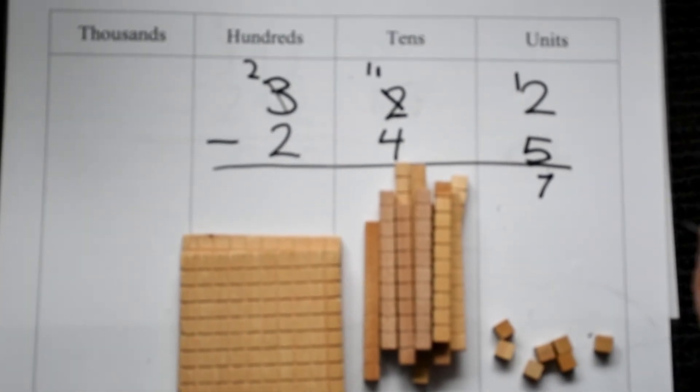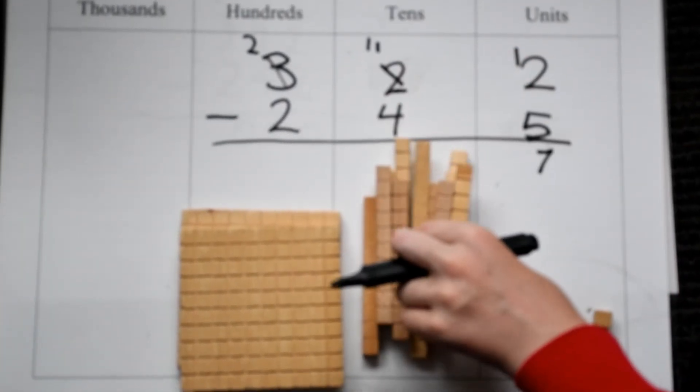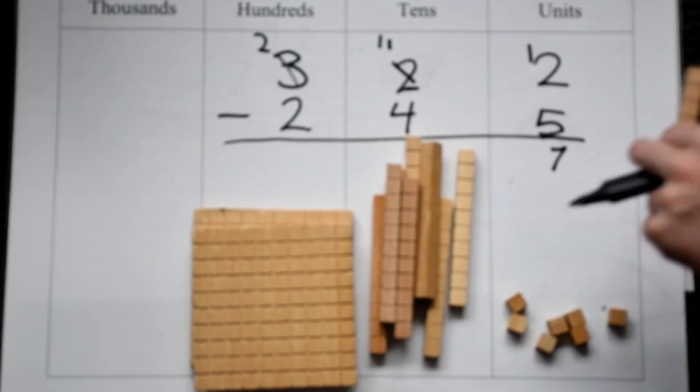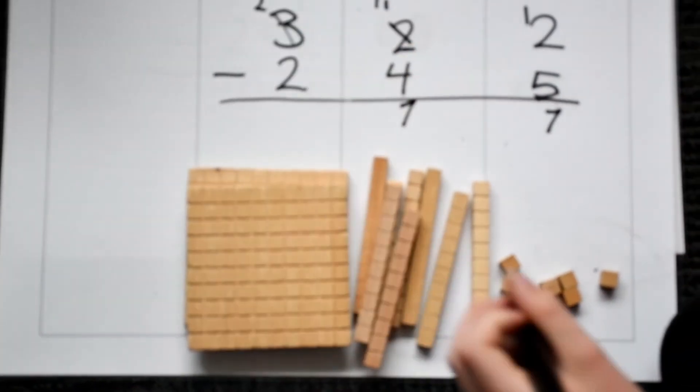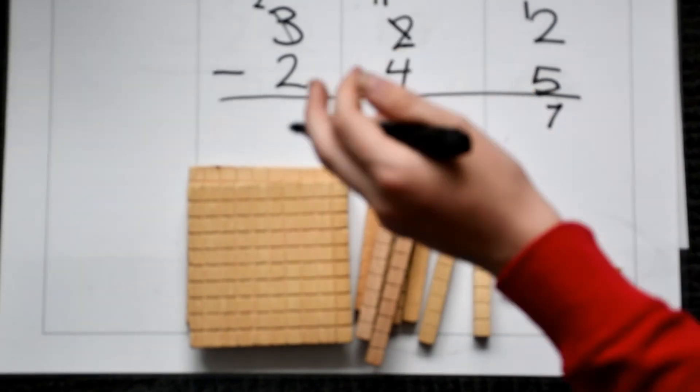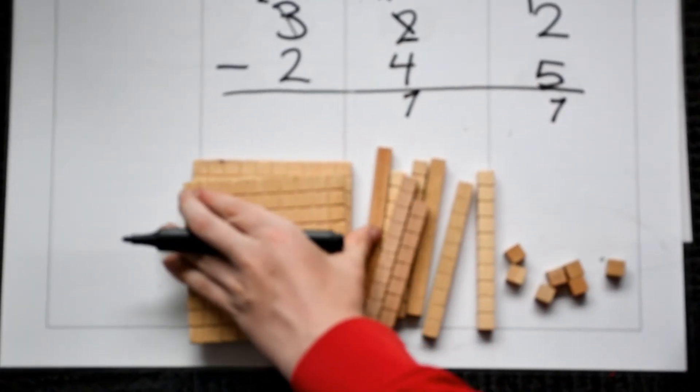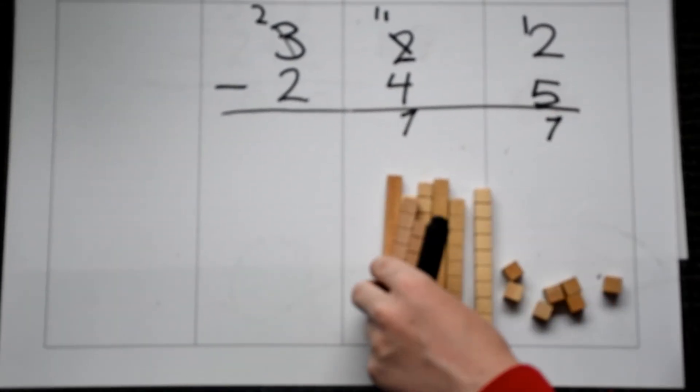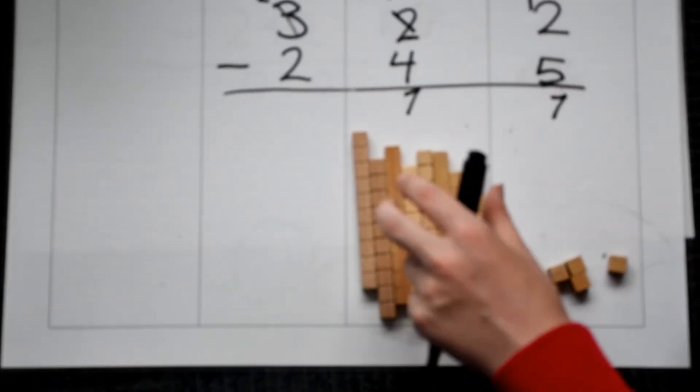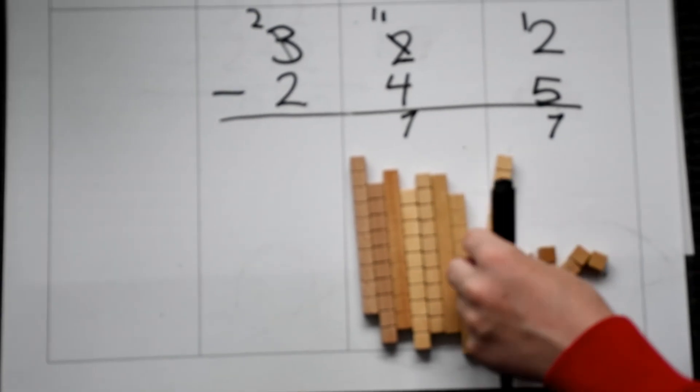11 minus 4 is 7. Finally, 2 minus 2 equals 0, so we take away the last 200. We get our answer of 7 tens and 7 units, which is 77.